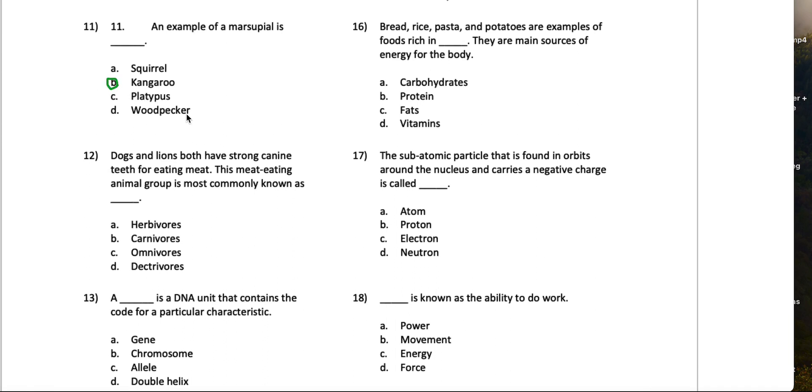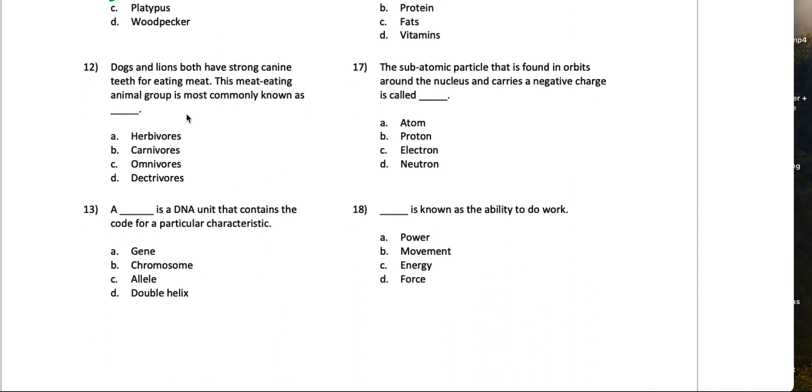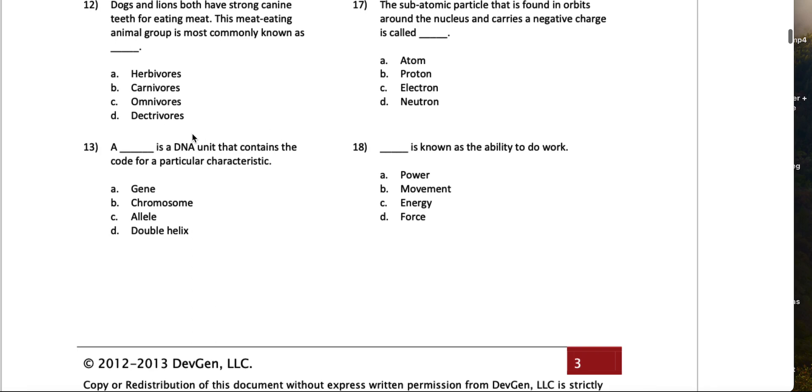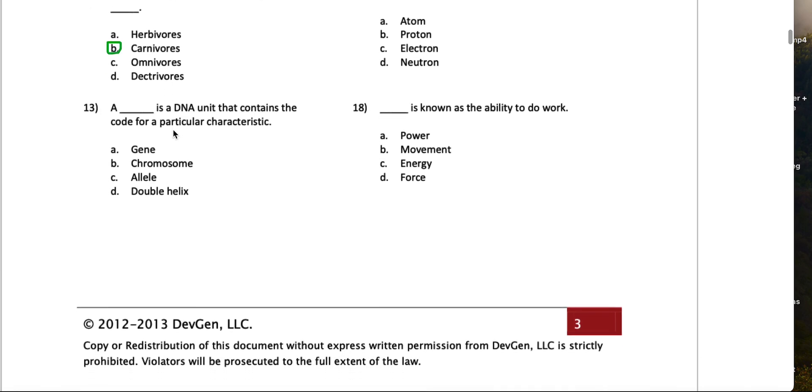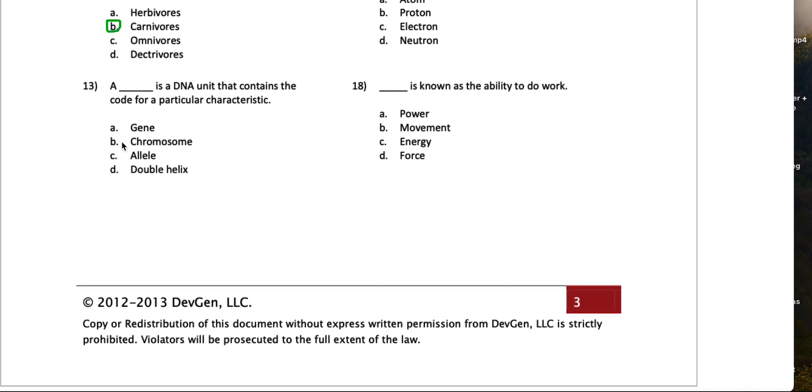Dogs and lions both have strong canine teeth for eating meat. This meat-eating animal group is most commonly known as... herbivores are solely plant-eating creatures or animals, carnivores are meat-eating ones, omnivores are both eating. So 13, I'd say a blank is a DNA unit that contains the code for a particular characteristic. I'd say the gene.